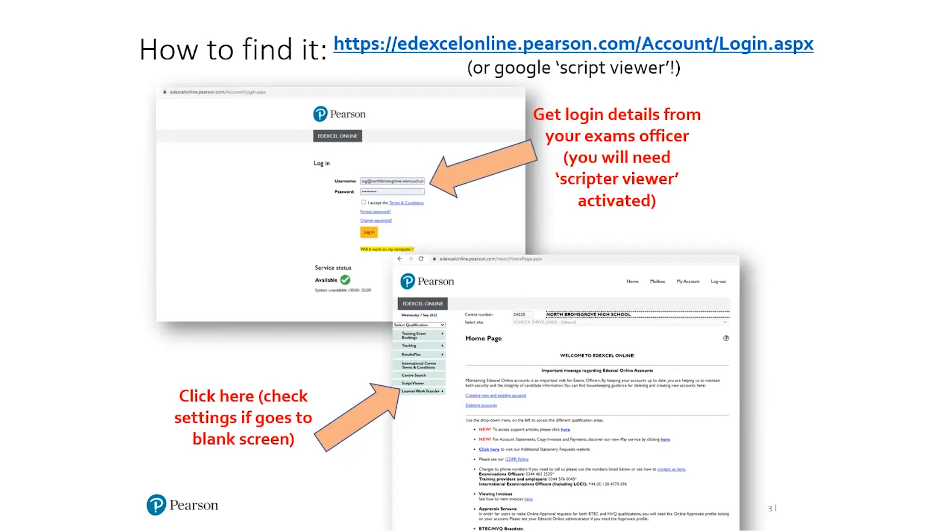The Edexcel online is that portal that has lots of links. And like Mal said, even if it's just a matter of getting your login details, see your exam officer or whoever controls that within your centre. I know at my school, it's the head teacher that actually controls and looks after the login details for the portals from the exam boards. But once you're in and you've got that bit sorted, check you've got the Script Viewer on the drop down part or the navigation on the left hand side. In terms of finding Edexcel online, just Google Edexcel online or even Script Viewer and it'll bring up the right connections in terms of what web page to go through to get there.